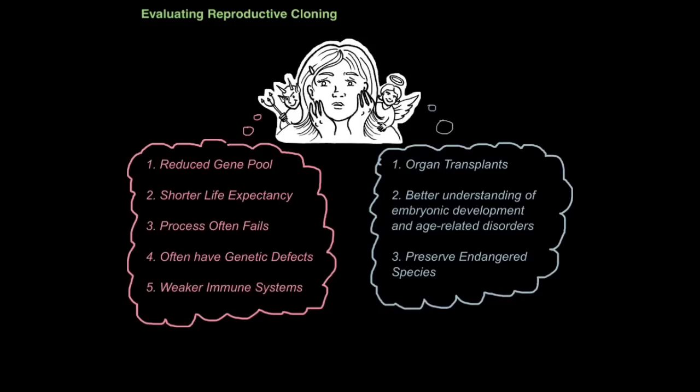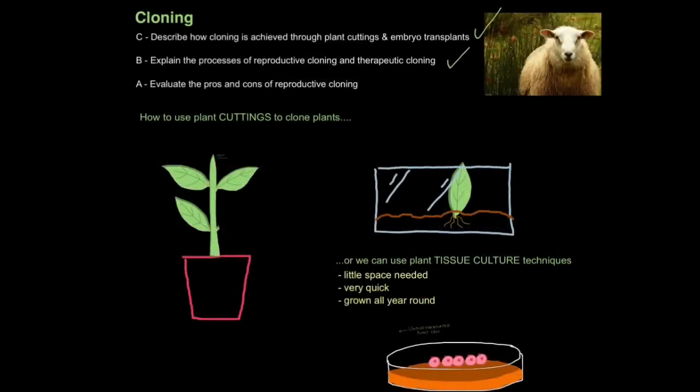On the plus side, however, we can use cloned animals for organ transplants. We currently clone pigs and use their organs for organ transplants in humans because there's such a shortage of donors. Reproductive cloning will also better our understanding of embryonic development, that's the developing embryo, and age-related disorders. And last but certainly not least, it is a way we can preserve endangered species. So here are the main arguments against and for. And this could again serve as a six mark question at the end of an exam paper. As usual, just pick three from each side and just make sure you can say something about it. And that is how you evaluate the pros and cons of reproductive cloning.